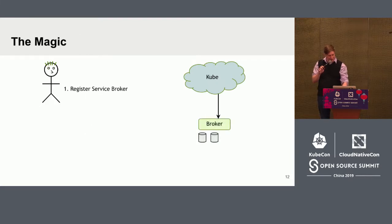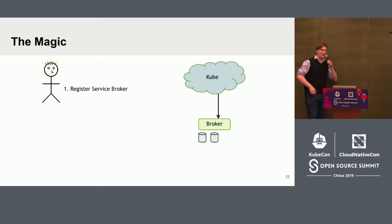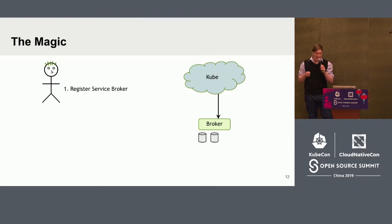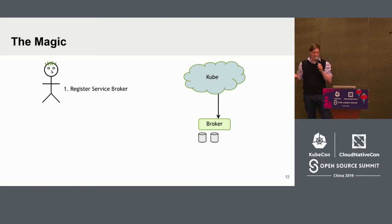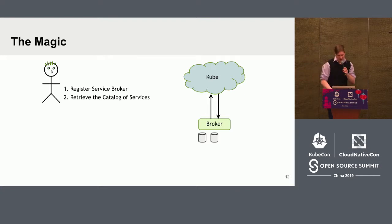I'm going to briefly step through the workflow of what actually happens. The first thing when using Service Catalog is you have to register a Service Broker — this is something done once, usually by an operator, and from then on, services offered by that broker are available in your cluster. When that happens, you create a Service Broker object in Service Catalog, and Service Catalog goes out to the broker and hits its Get Catalog endpoint, which returns a list of all the classes and plans of services offered by that broker, which we store for later use.